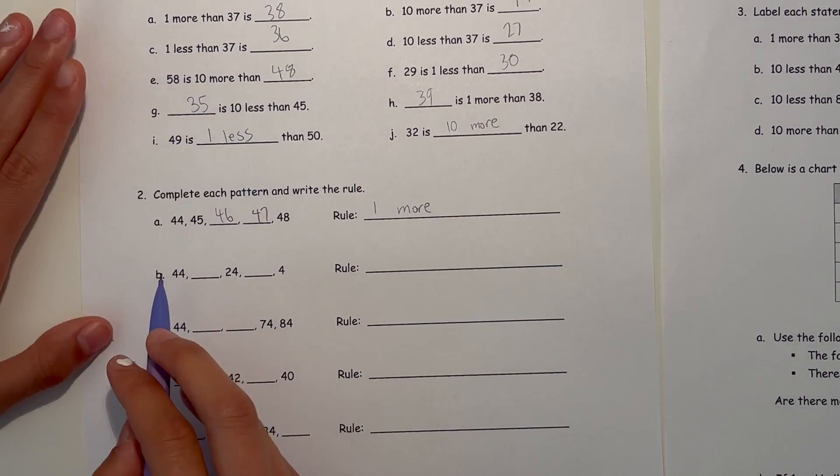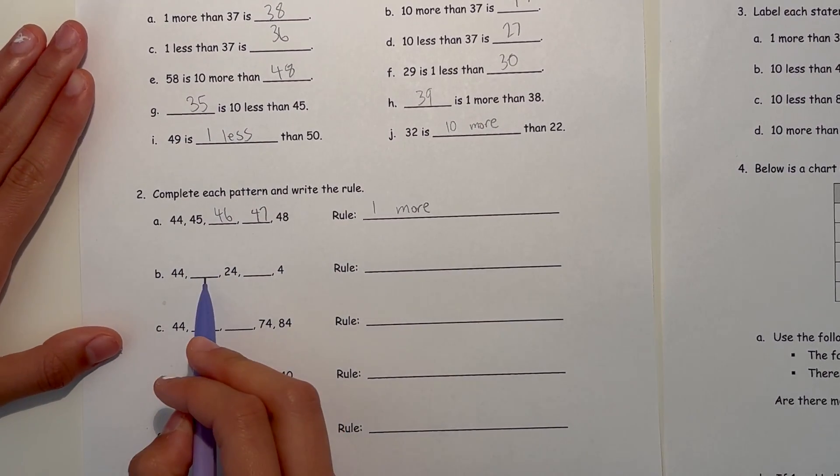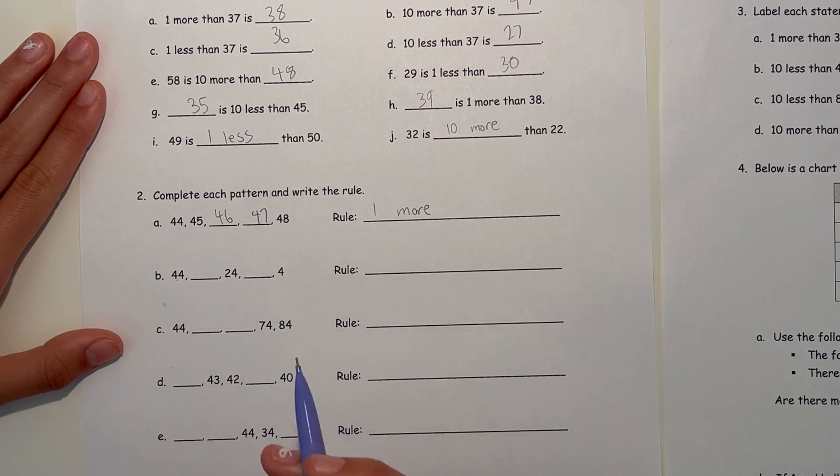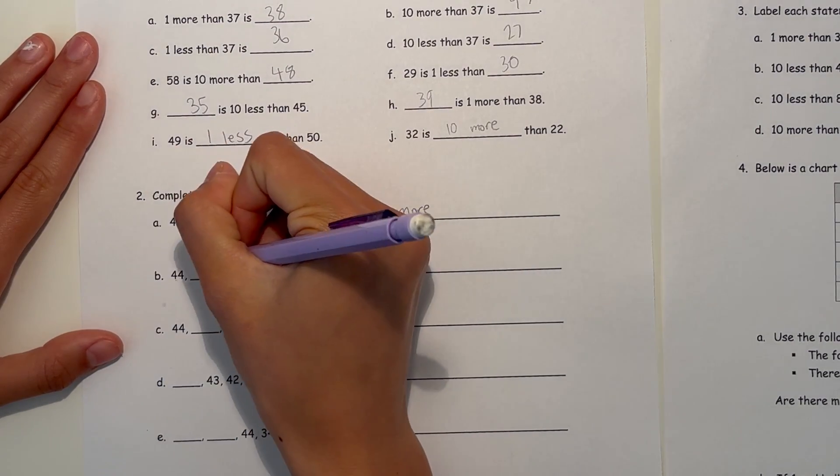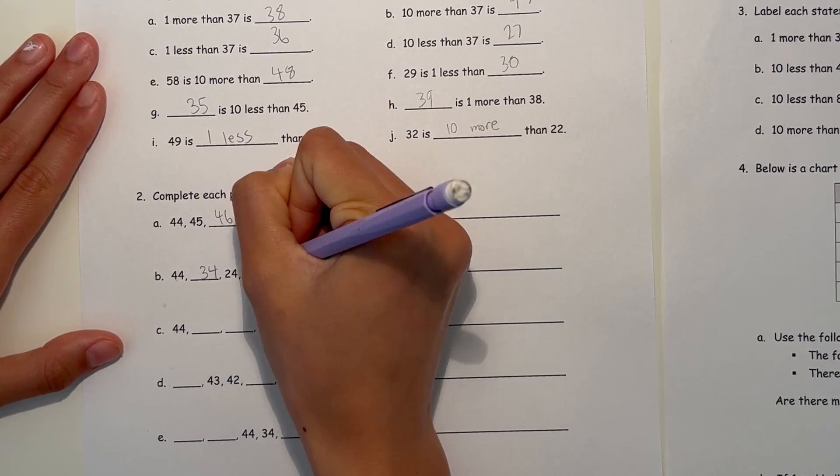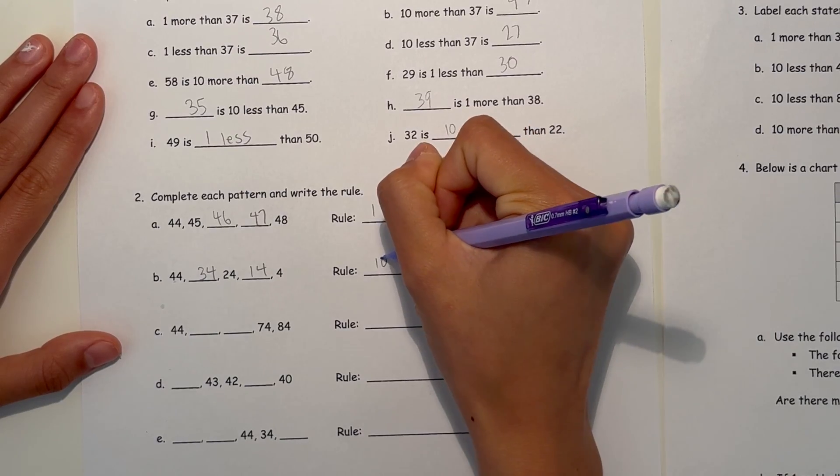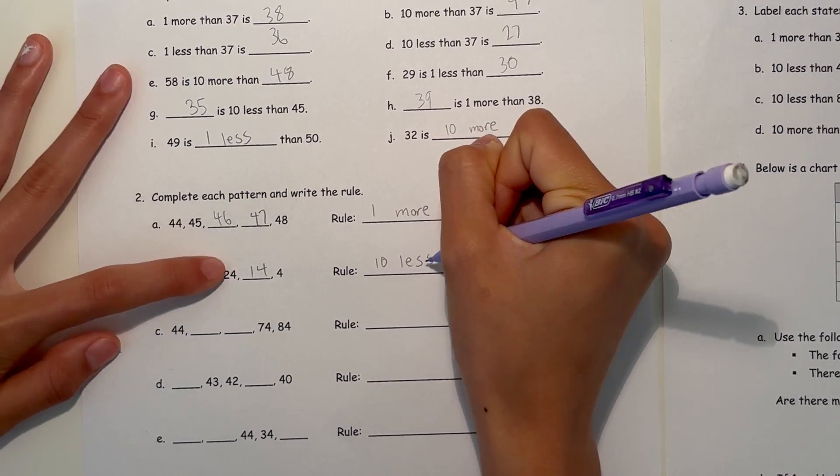Now B, 44. Let's see. We don't know what's in between, but we do know it jumps to 24. That's a big jump. So maybe by tens. 44, 34, 24, 14, and 4. So the rule here is 10 less, because each time we go, we're going 10 less.